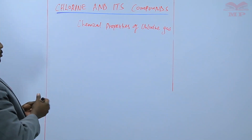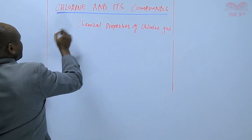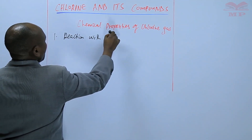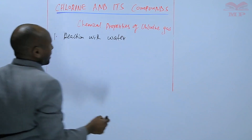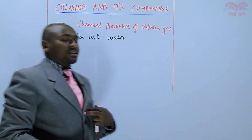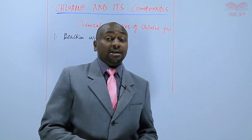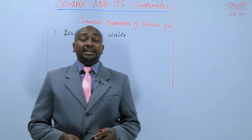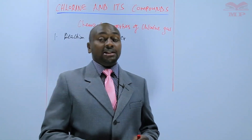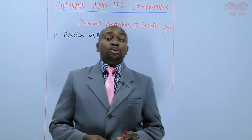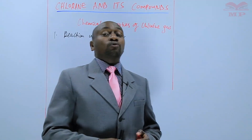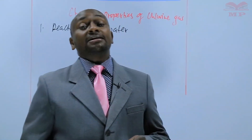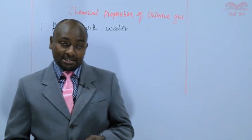The first chemical property of chlorine gas is its reaction with water. When we discussed the physical properties, we noted that chlorine is fairly soluble in water. A reaction takes place and this reaction leads to the formation of two acids: hydrochloric acid and hypochlorous acid.